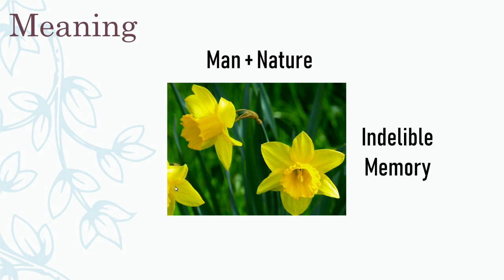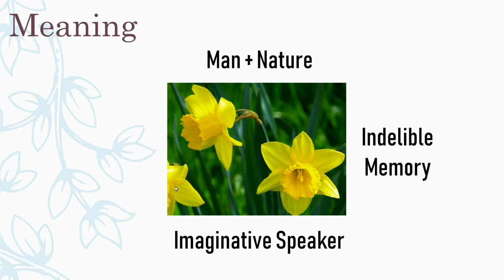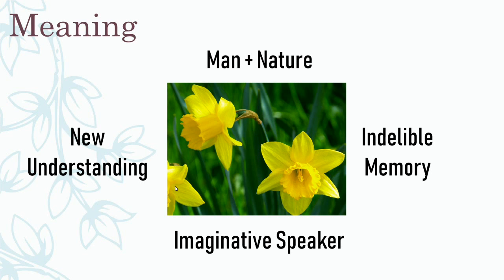The poem also shows that the speaker feels a spiritual connection to the natural world. He is very imaginative — he can see the scene in full color in his own inward eye, or in his own mind. Most importantly, the speaker gains a new understanding. He talks about the wealth that this show of daffodils has brought him, but he's not talking about literal wealth as in money or riches — he's talking about a new wealth of knowledge. Now the speaker understands that he can gain simple pleasure from something as small as a single flower.